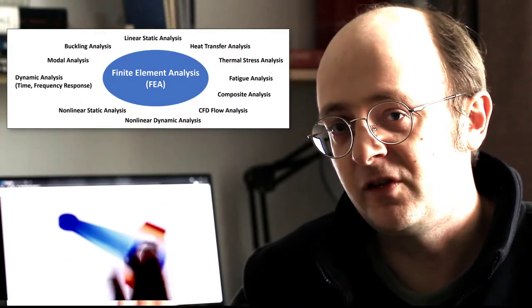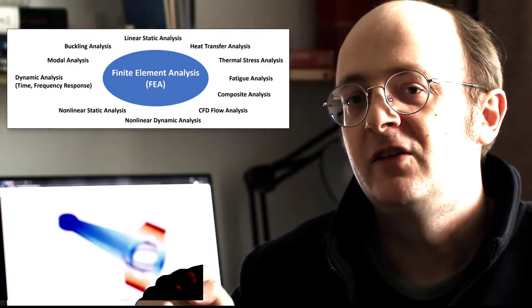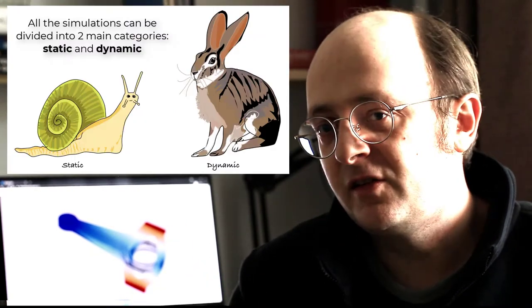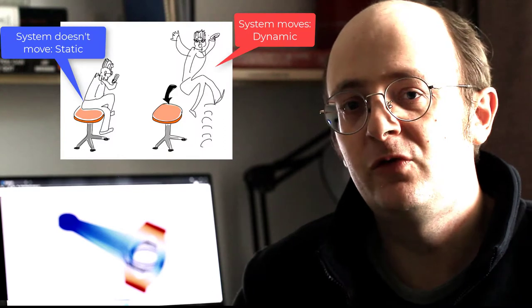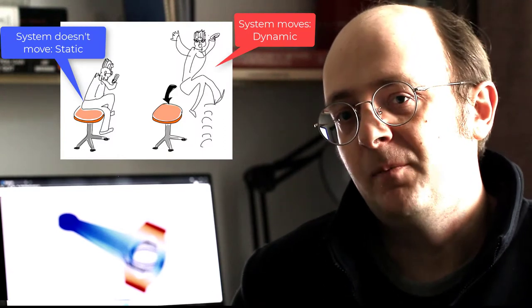In FEA you have several types of simulations. You have static simulations and dynamic simulations. Static simulations are the most common type where you suppose the system doesn't move, it's fixed. The less common type is the dynamic simulation, where the system moves dynamically and there's an influence of this movement on the behavior of the system.